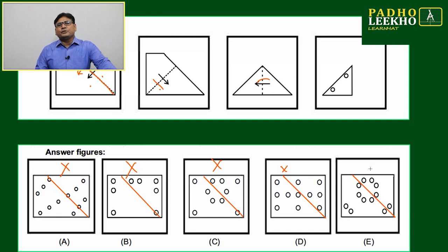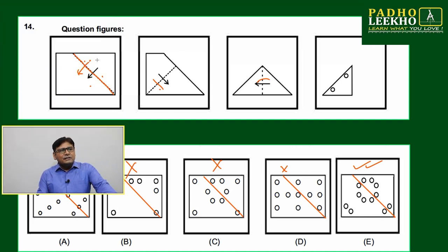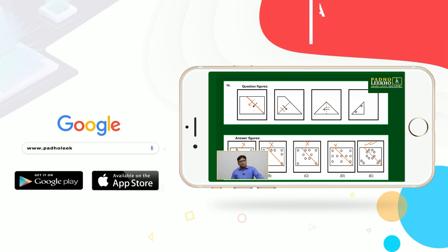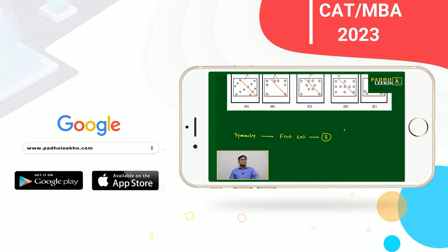Without much effort you will be able to get the correct option. Like here, once you are dividing by this line, exactly you are putting this line, you are getting symmetrical number of holes. Four on this side, four on this side, and these two, these two, because due to one folding. Then option E will be the answer.